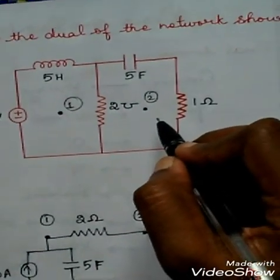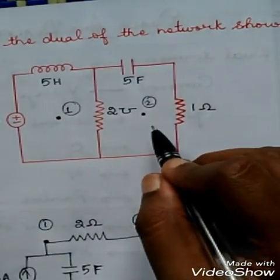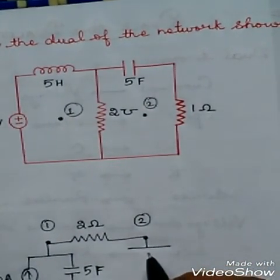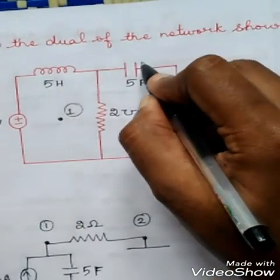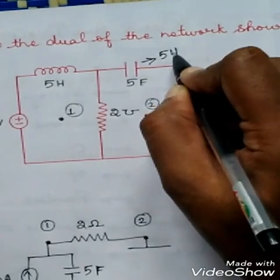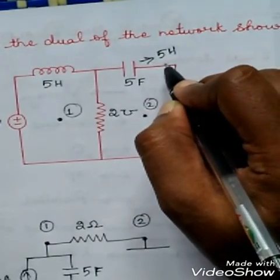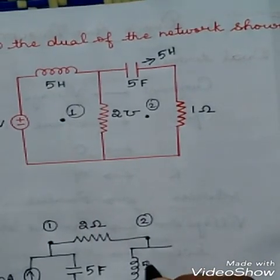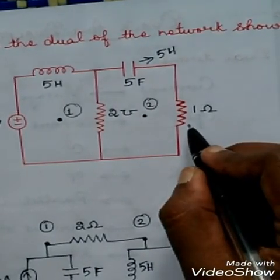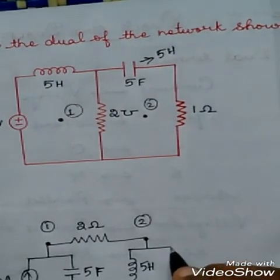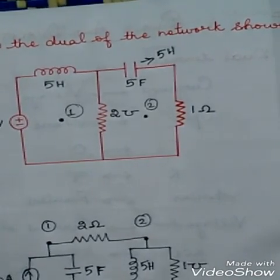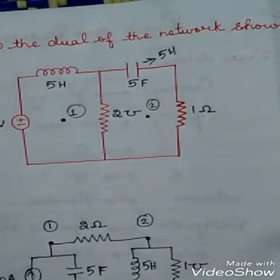Coming to mesh 2, the unique elements are 5 farad and 1 ohm, connected in series in mesh 2, so they are connected in parallel in node 2. The 5 farad capacitance is converted to its dual term — inductance — so it becomes 5 Henry, with the value unchanged. The dual value of the 1 ohm resistor is conductance, so mark it as 1 mho.